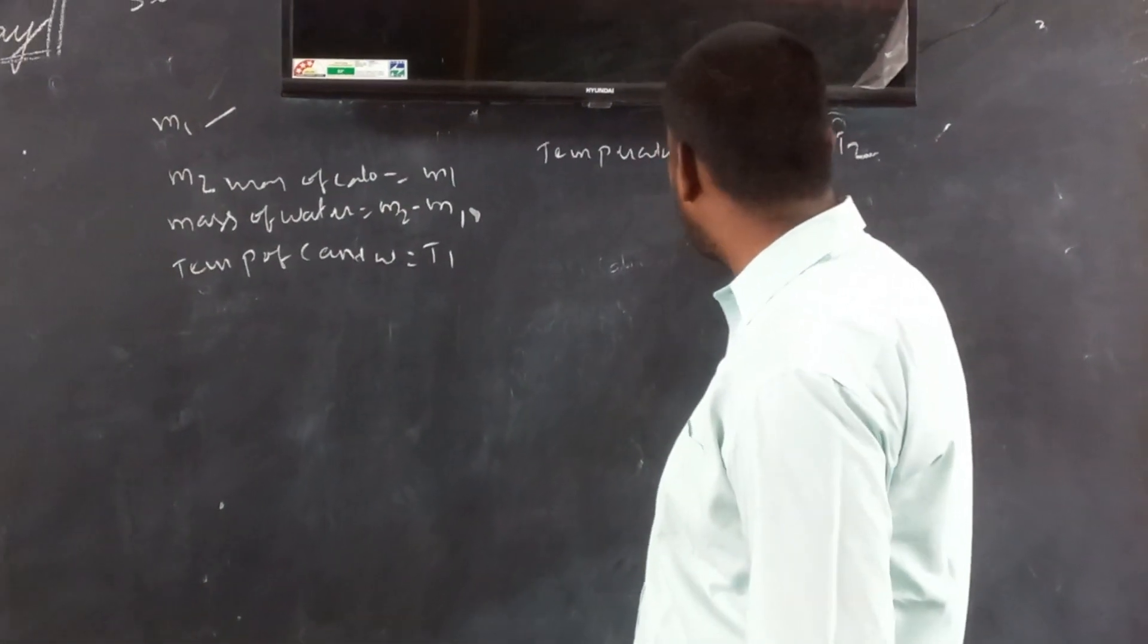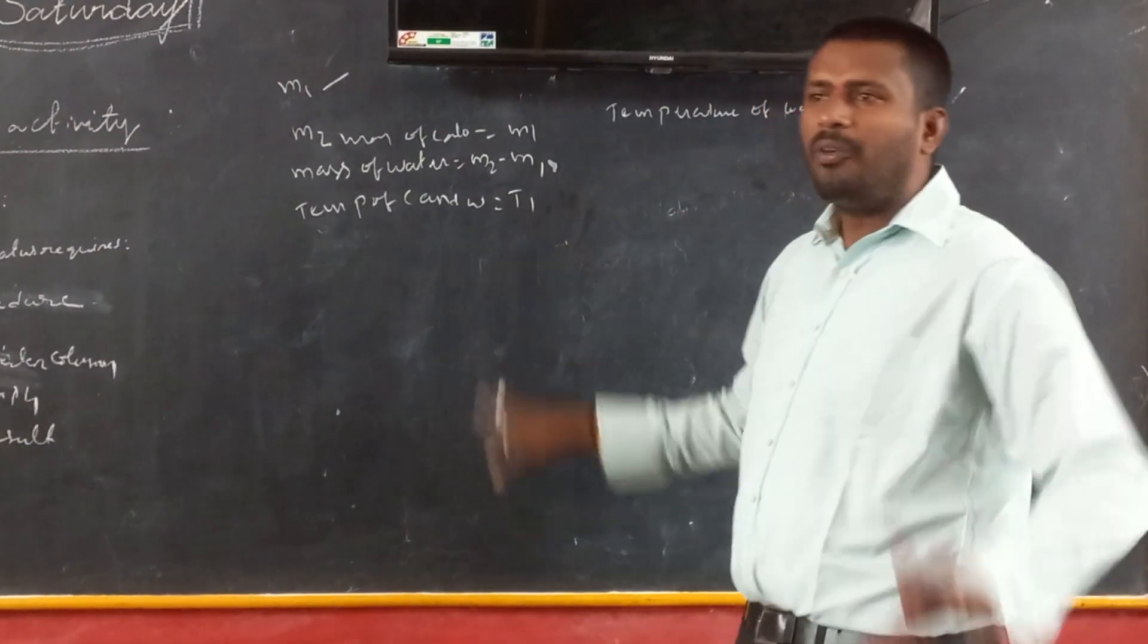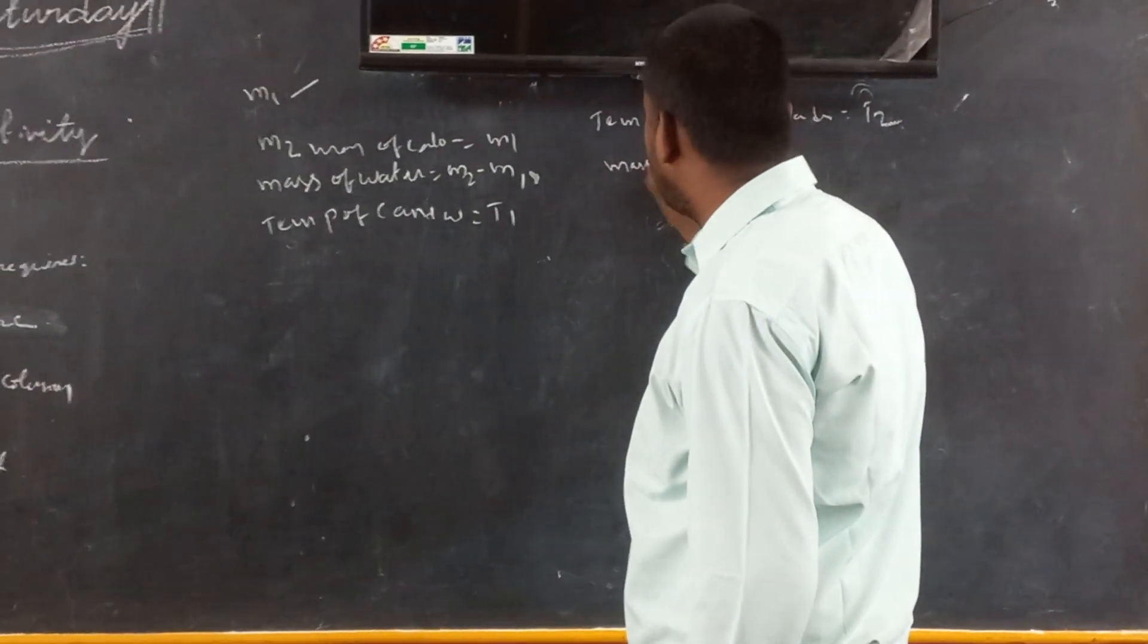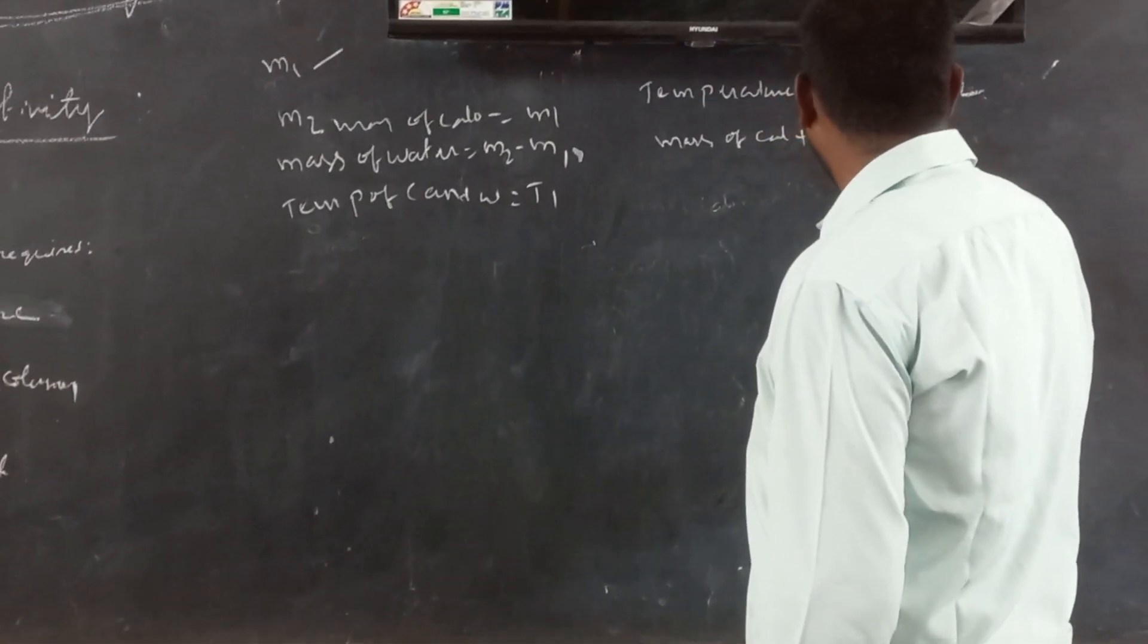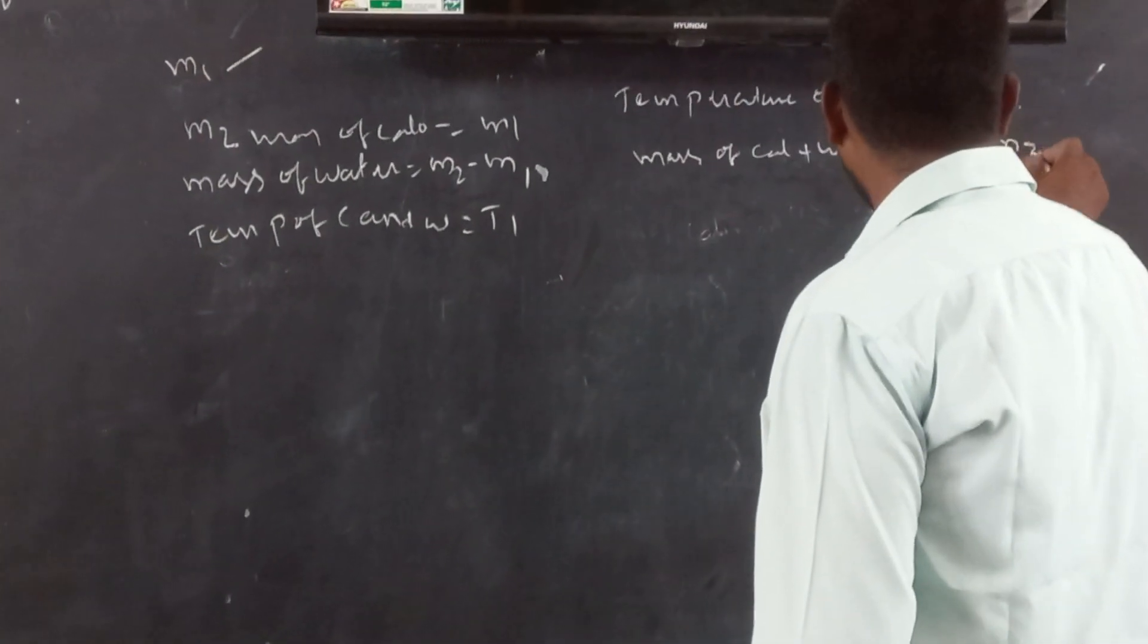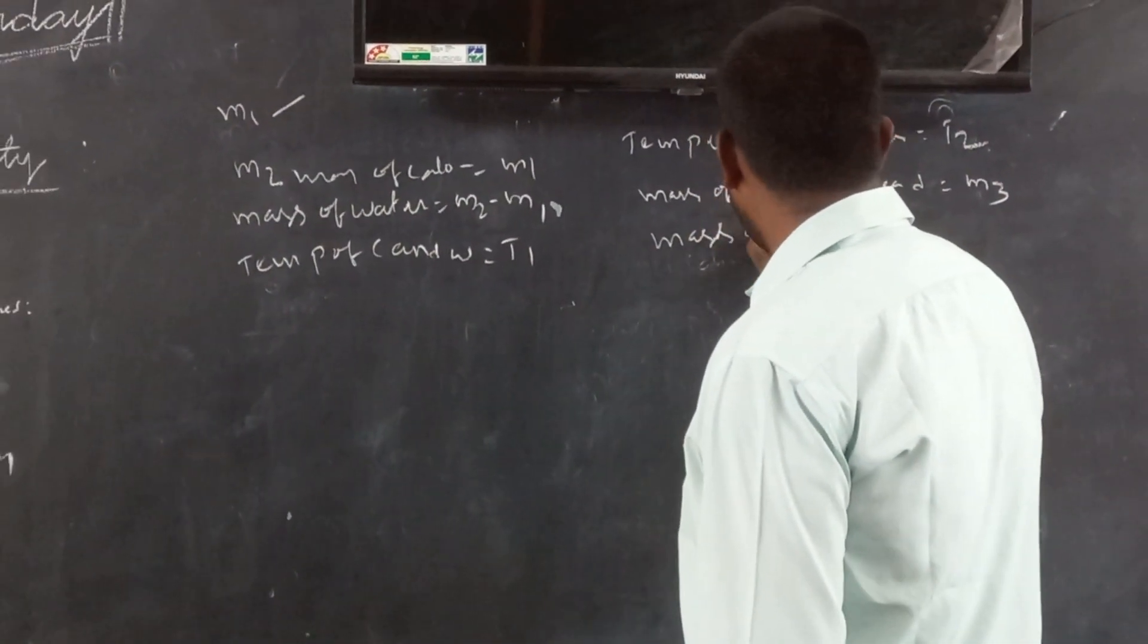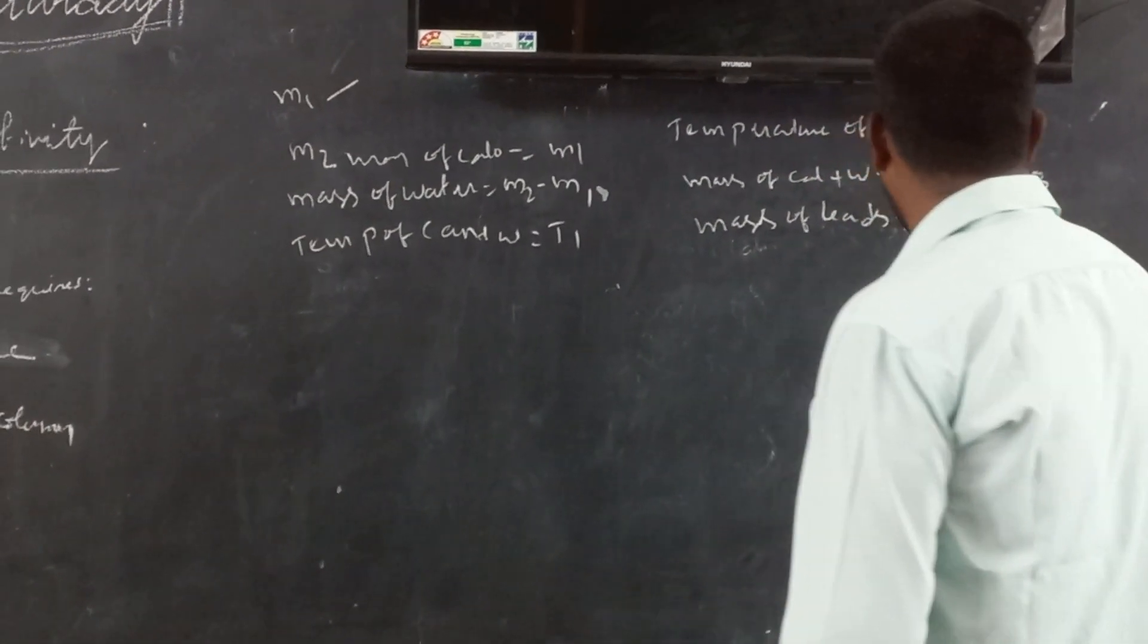Now, quickly transfer the content of lead shots into the calorimeter with some loss of heat. Then, the mass of calorimeter, water and lead shots is M3. If you want to find out only the mass of lead shots, only the mass of lead shots is M3 minus M2.